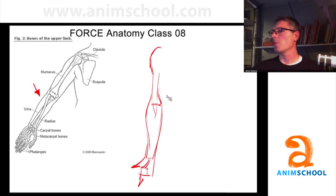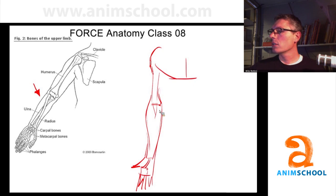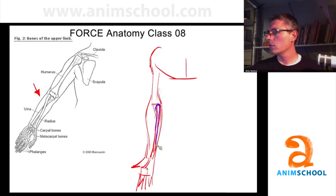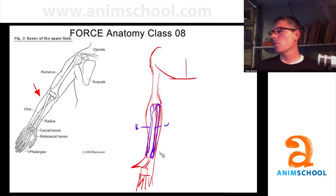Here's a deltoid, here's a bicep, this is the forearm, here's the hand — palm up. The guy's looking at us, palm up. You have the ulna sitting here, and the radius sitting parallel to it.